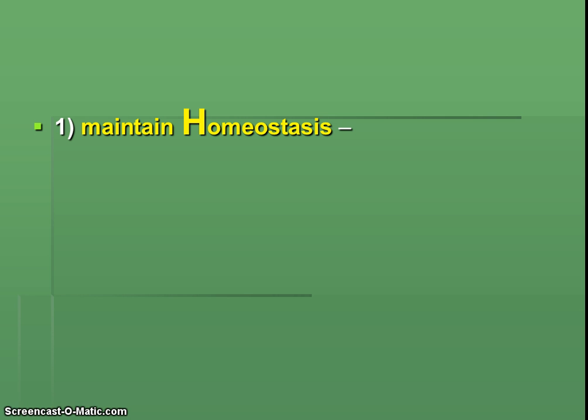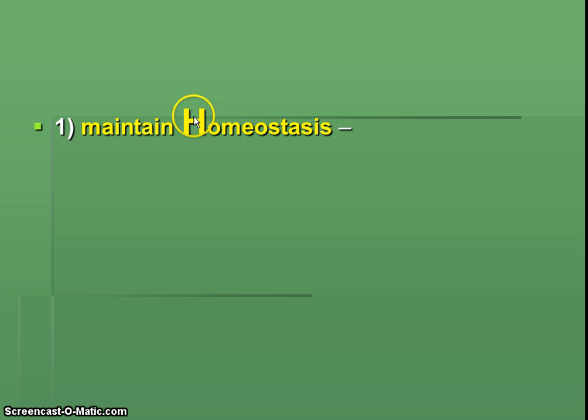Alright, let's begin. If for some reason I go too fast, you should pause so you can catch up. That's the wonder of this being digital. Our first characteristic of life — we would number it number one, and then maybe put an underline over this since it's a kind of subtitle to make sure it stands out. And we would say: maintain homeostasis.